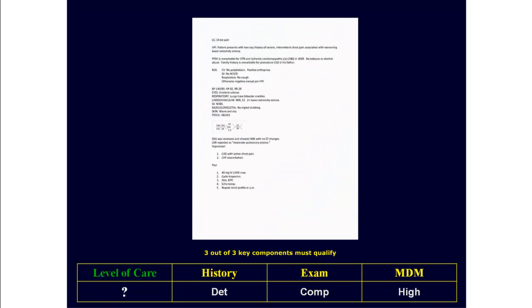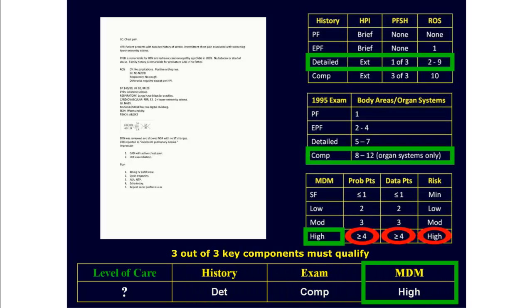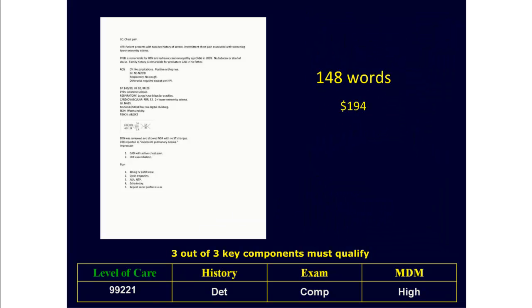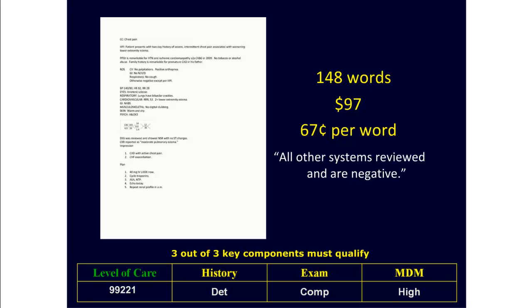When you put it all together, this is how the final note looks. Three out of three key components are needed, and here we have a detailed history, a comprehensive exam, and high-complexity medical decision-making. This note took 148 words to create. We all know it should be a level 3 H&P, in which case we would have been paid $194, or $1.31 per word. But because of that ROS mistake, we would only get paid for a level 1 H&P, which pays $97, or about $0.67 per word. So remember the magic words: all other systems reviewed and are negative.